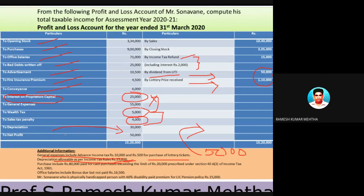Purchases include eighty thousand paid in cash for purchases exceeding the limit. Please note this rule has changed — from the relevant assessment year the limit is ten thousand rupees. Any cash payment exceeding ten thousand rupees in a single day to a single person is not allowed on the debit side of profit and loss account. So eighty thousand paid in cash for purchase of goods is not allowed, as it creates scope for black money. This falls under Section A-3 of Income Tax Act 1961.